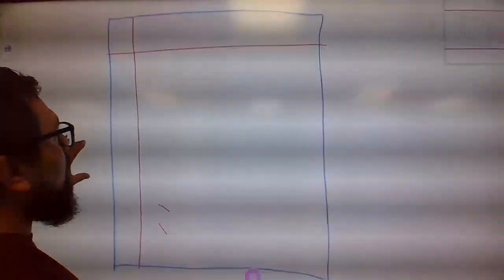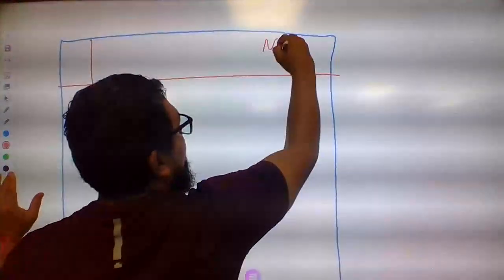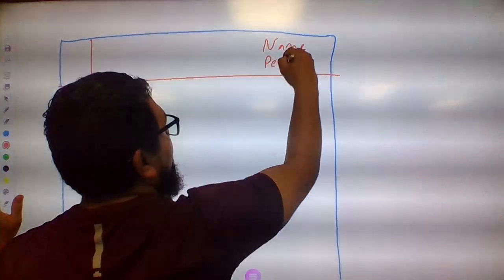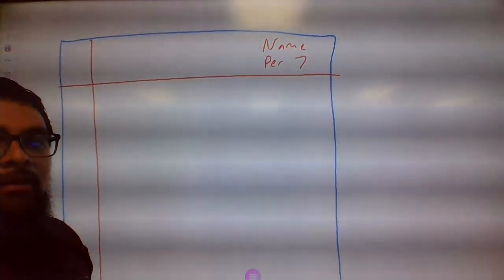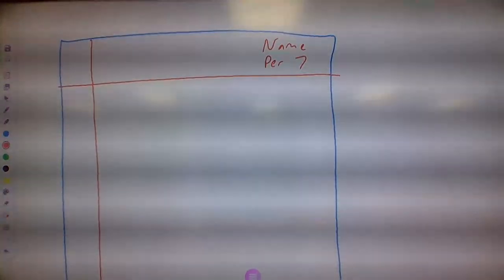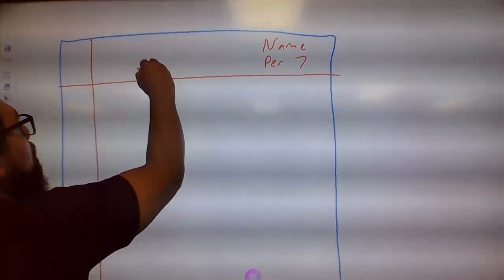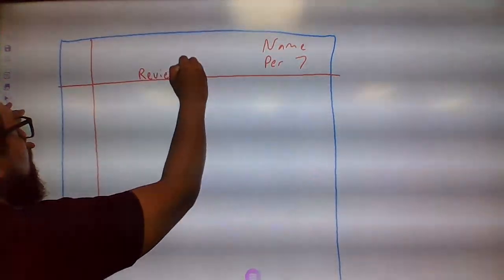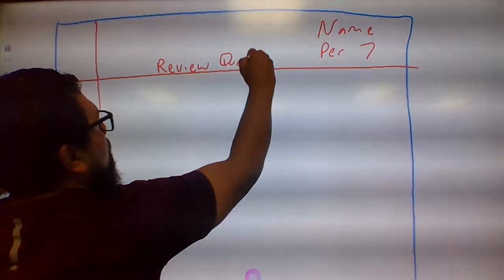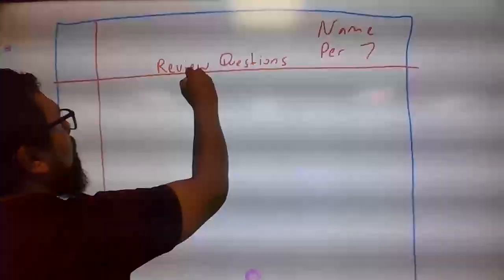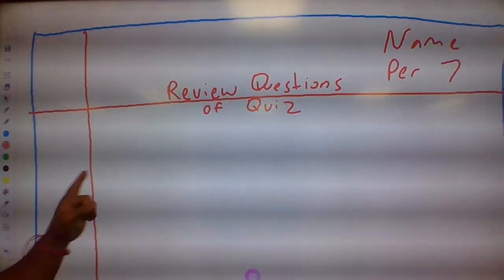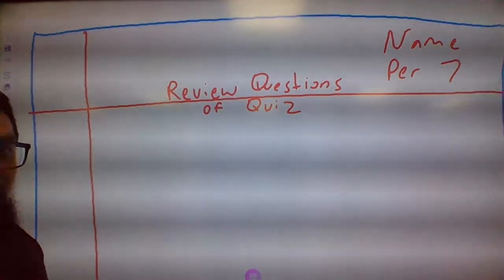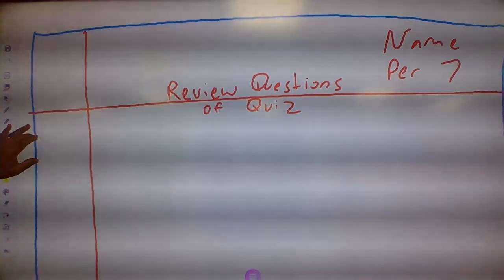Then you're going to put your name up here — let me zoom in — so you're going to put your name and then the period, which is period seven. Make sure you put your name and period seven. Right here in the middle you're going to put 'Review Questions of Quiz.' That's what you're going to put on top.